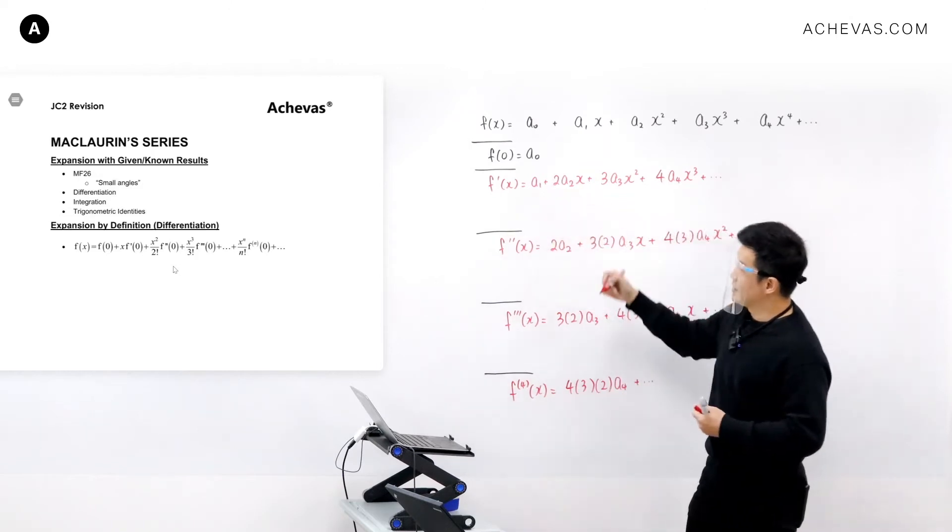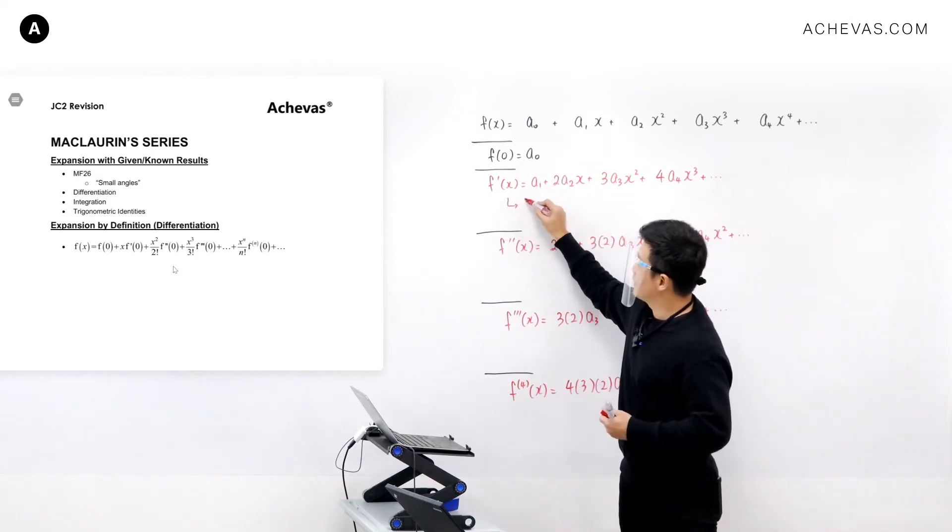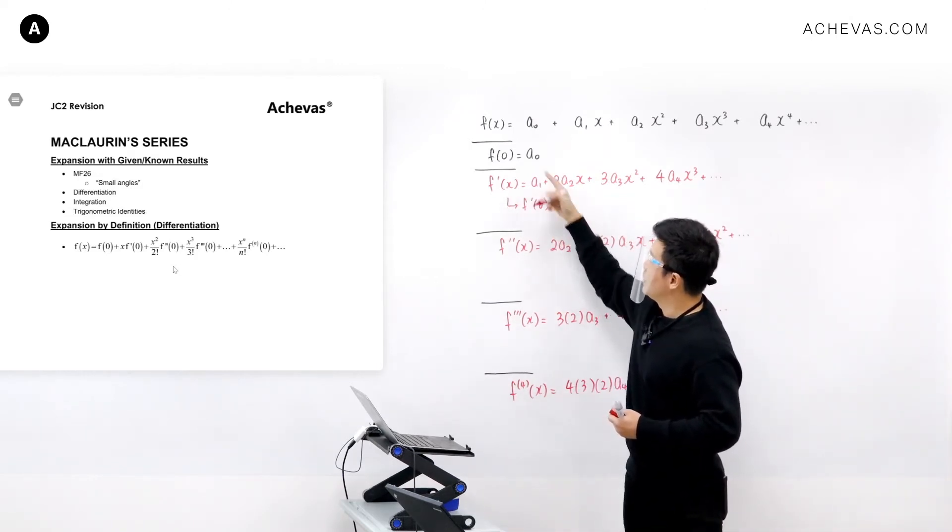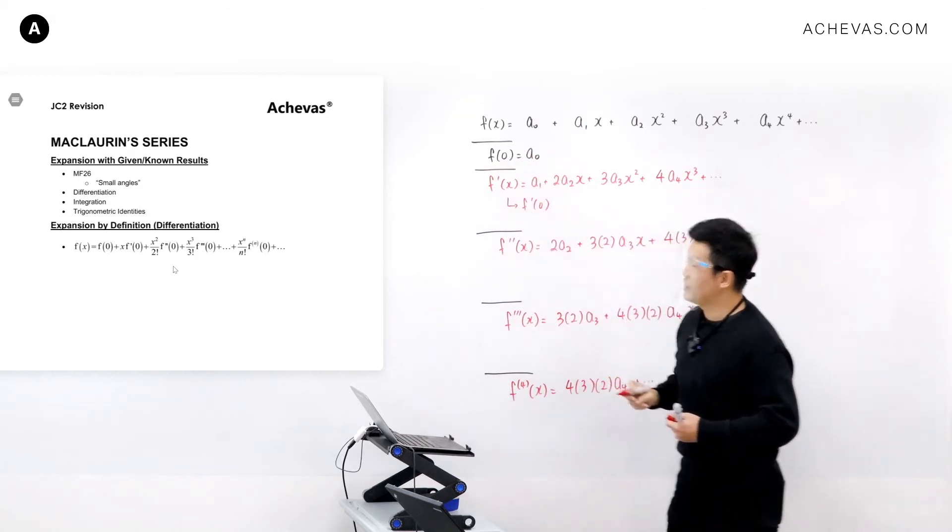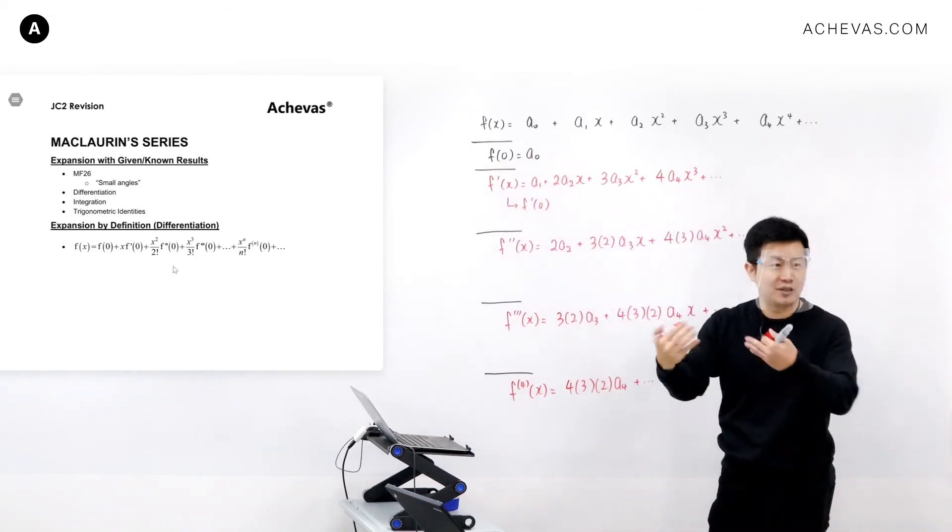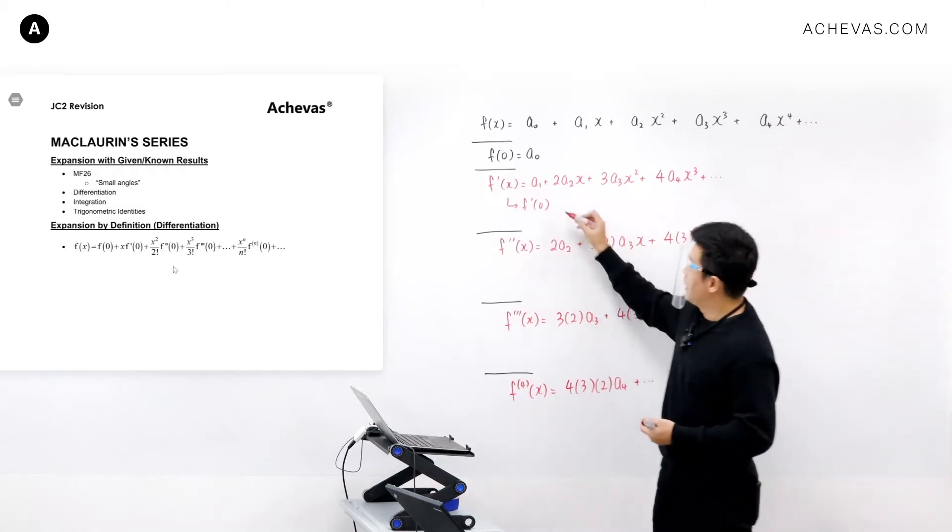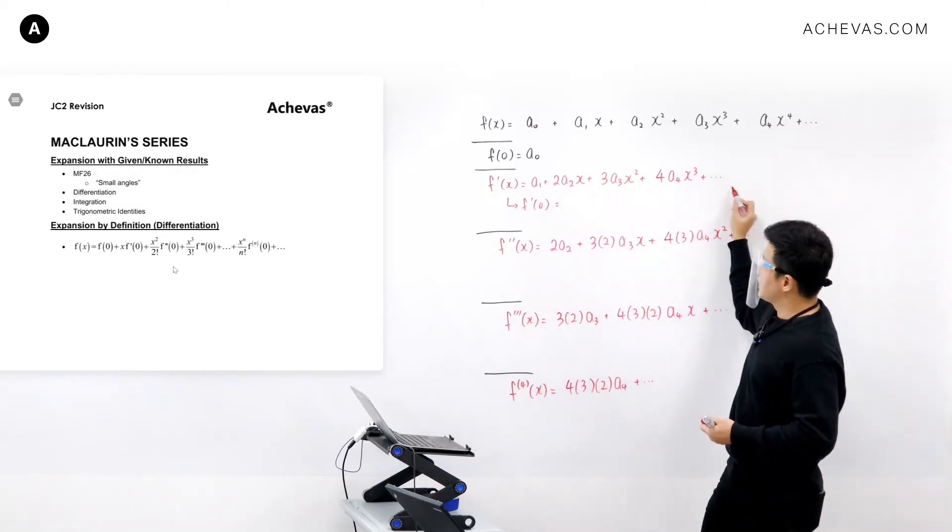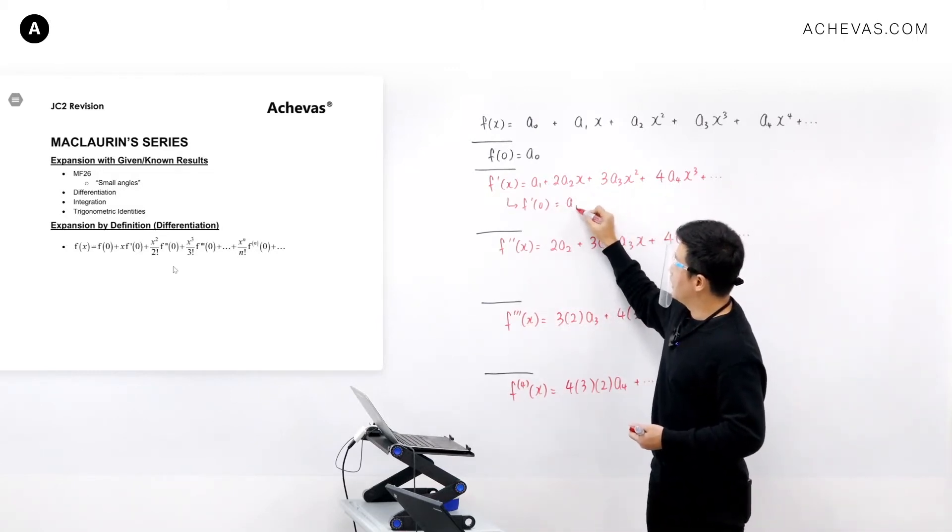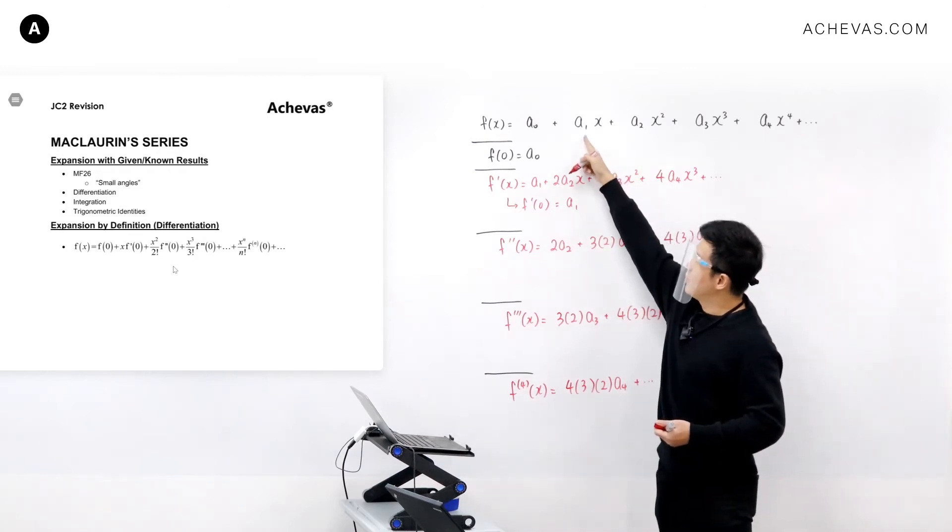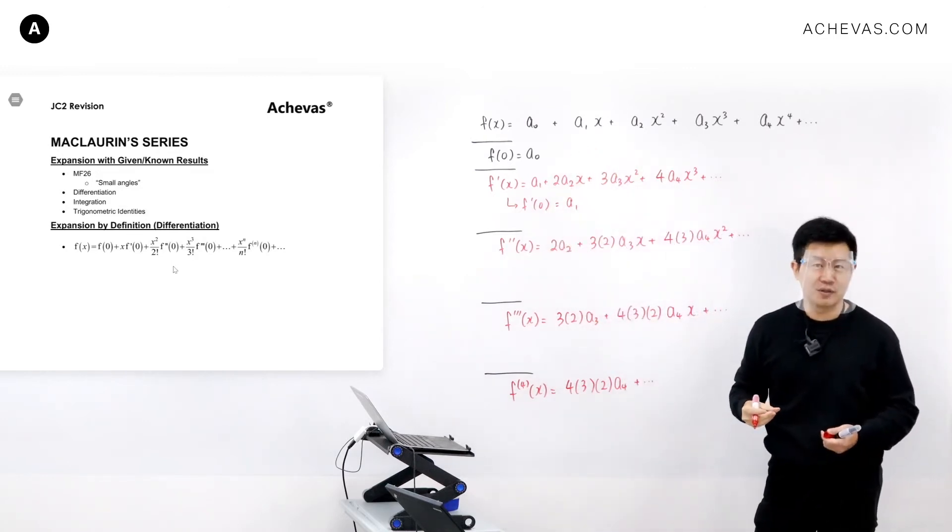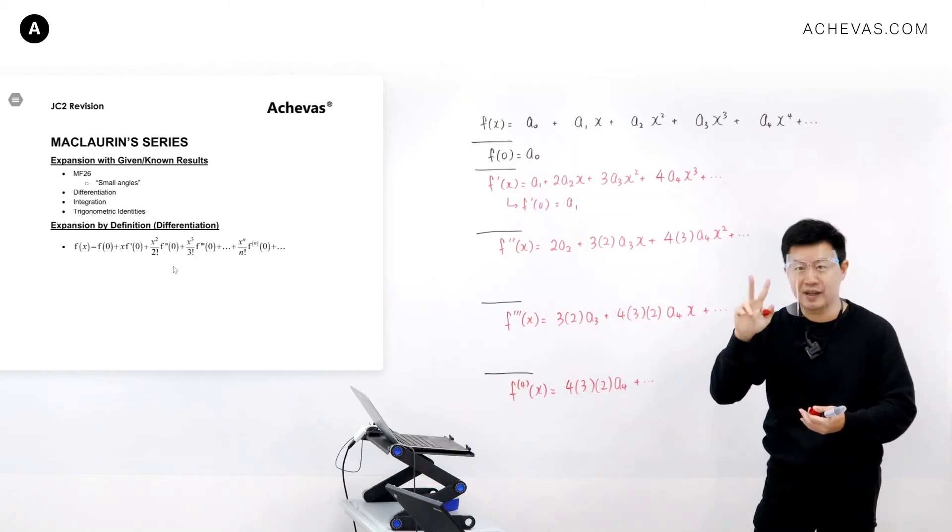Because it still has x, I can use the same idea. I can replace all the x by 0 again. On the left-hand side, I will have f'(0). When I differentiate e to the power of x, it is still e to the power of x, so I can sub 0 in. On the right-hand side, all these terms become 0, so a1 equals f'(0).